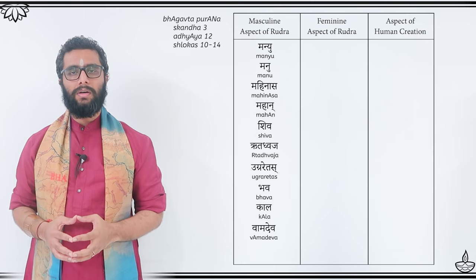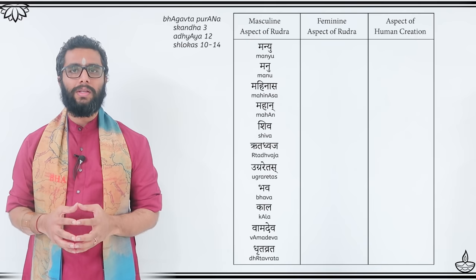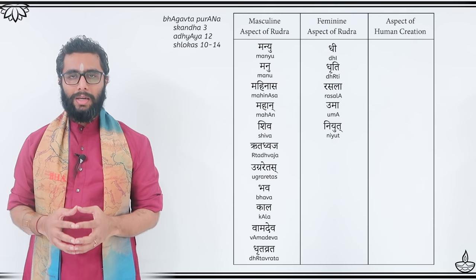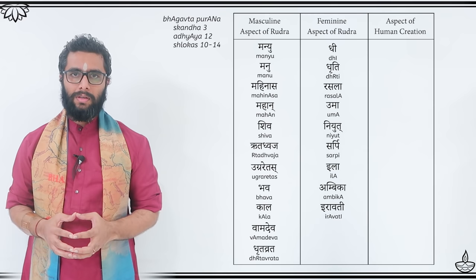The corresponding feminine aspects of these energies are known by the names of Dhee, Dhriti, Rasala, Uma, Niyut, Sarpi, Ilha, Ambhika, Iravati, Svadha, and Deeksha.